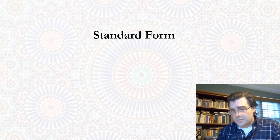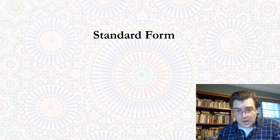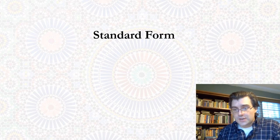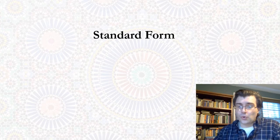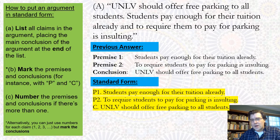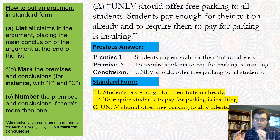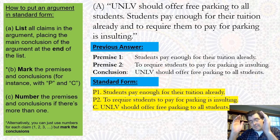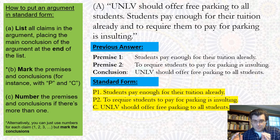In this video I'll be talking through something that we've already practiced a little bit without having given it a label, which is putting arguments into standard form. A standard form summary is basically a list of the claims in an argument, ordered so that the premises are listed above the conclusions that they support.